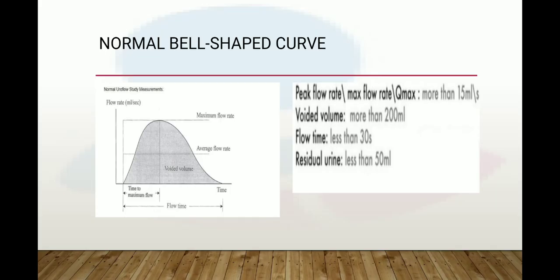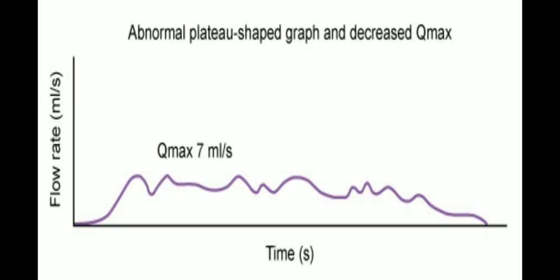A normal uroflow study shows a bell-shaped curve. Normal measurements include: peak flow rate (Q-max) greater than 15 ml/second, voided volume greater than 200 ml, flow time less than 30 seconds, and residual volume less than 50 ml. An abnormal plateau-shaped graph with decreased Q-max indicates voiding dysfunction.